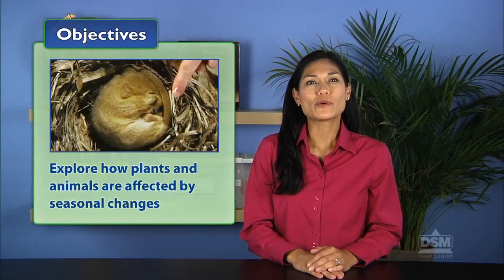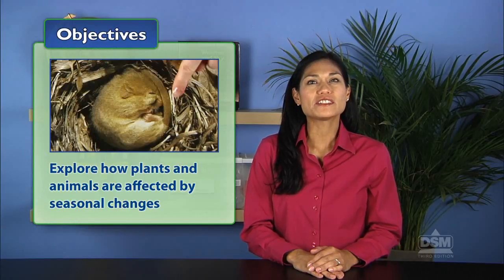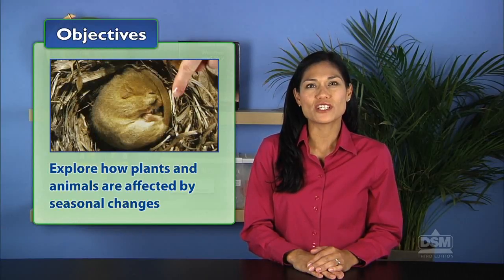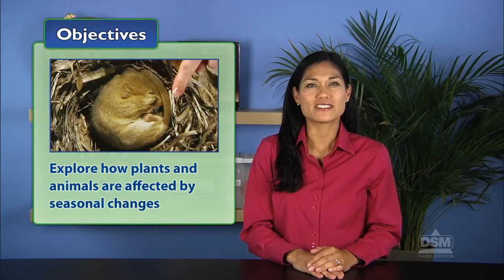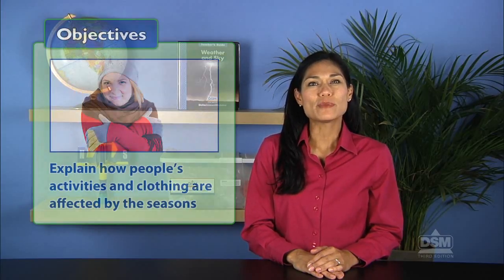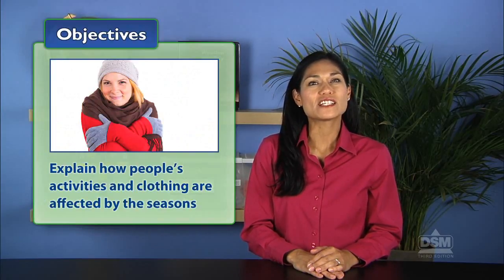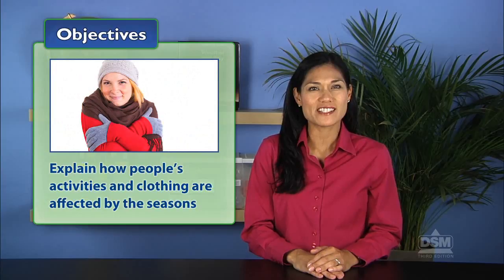In Activity 8, Living Things in Seasons, students explore how plants and animals are affected by seasonal changes in light, temperature, and precipitation. They also learn how people's activities and clothing choices are affected by the seasons.